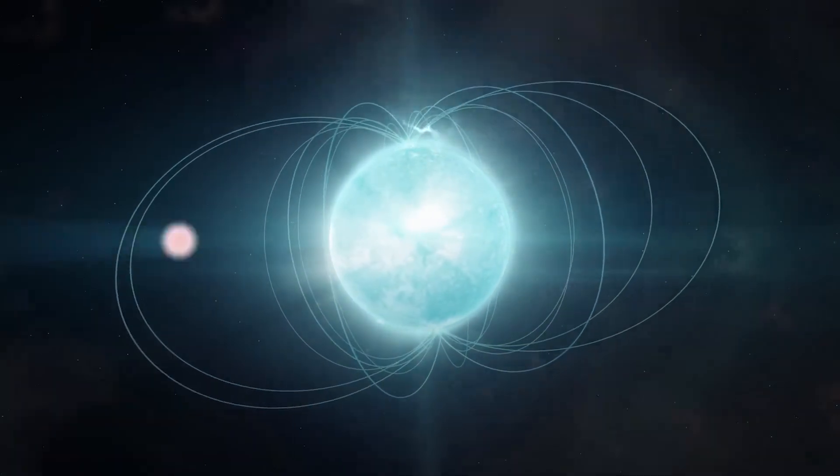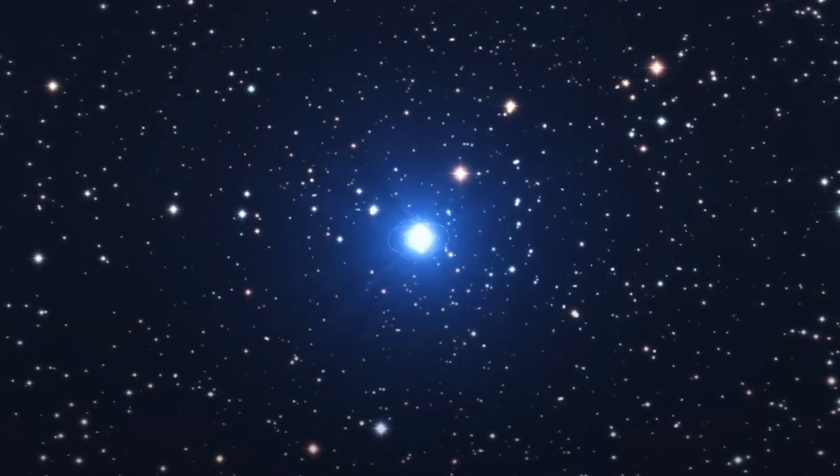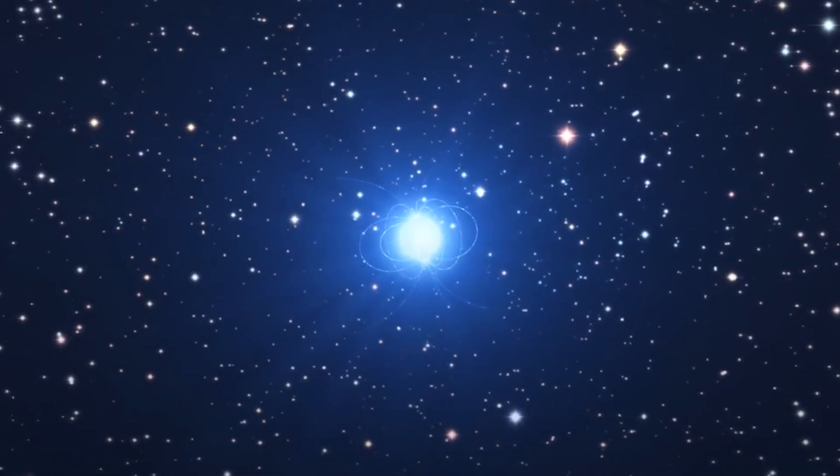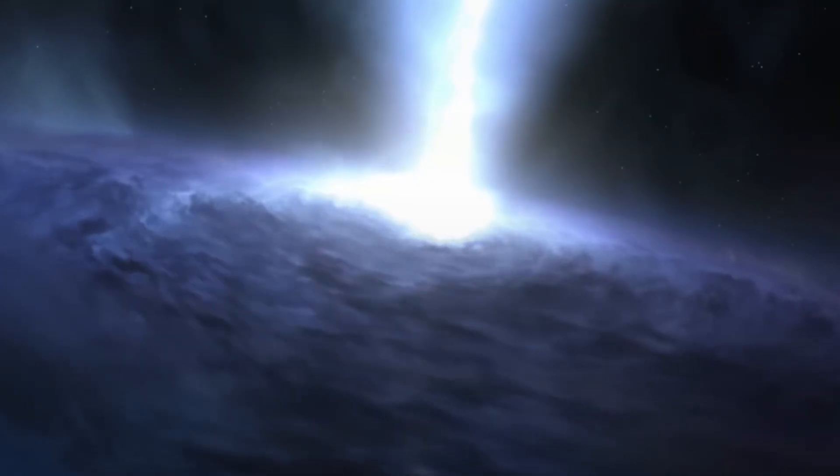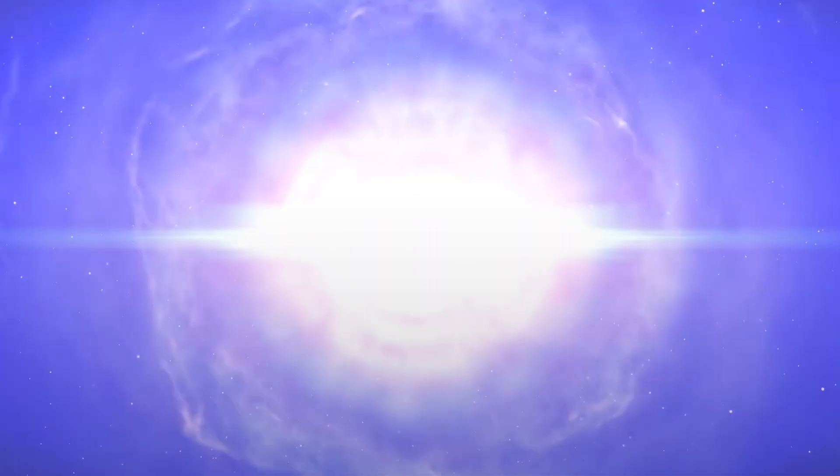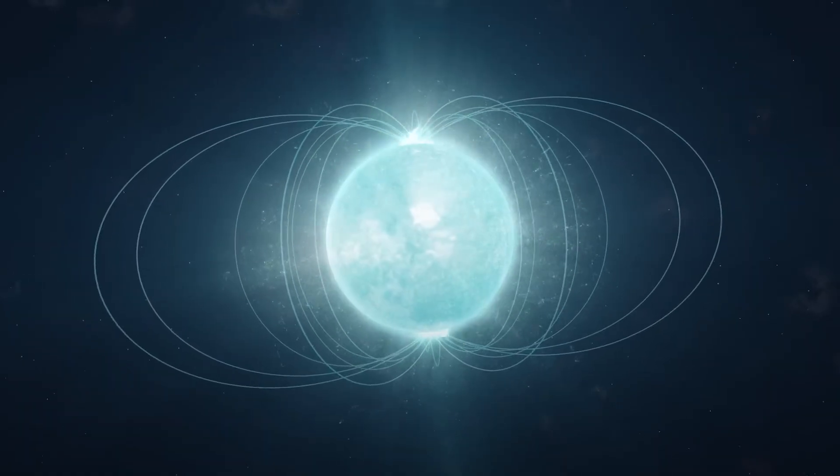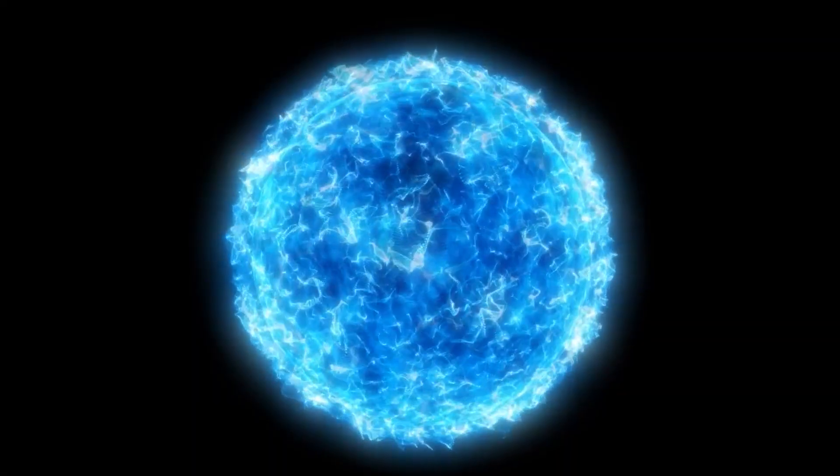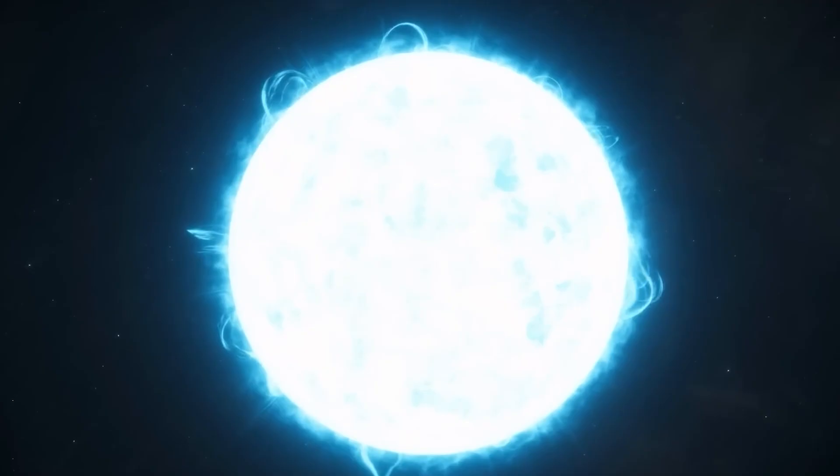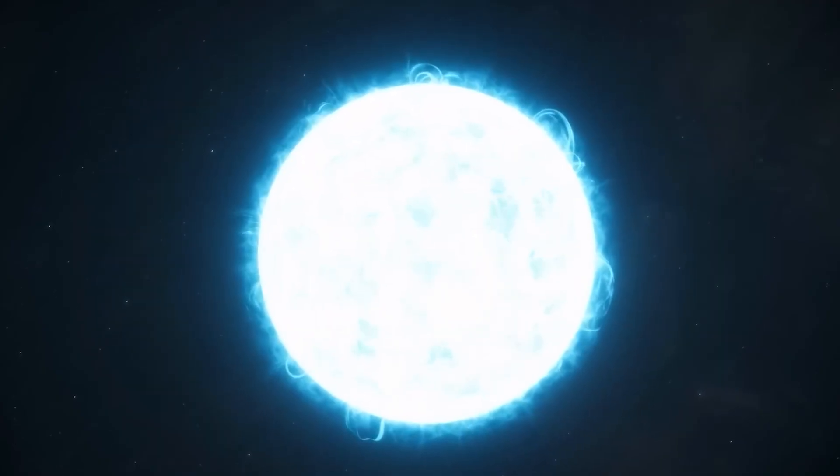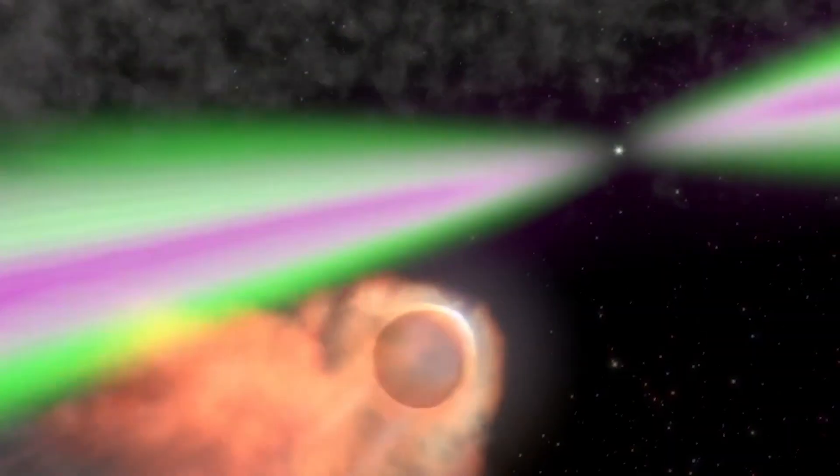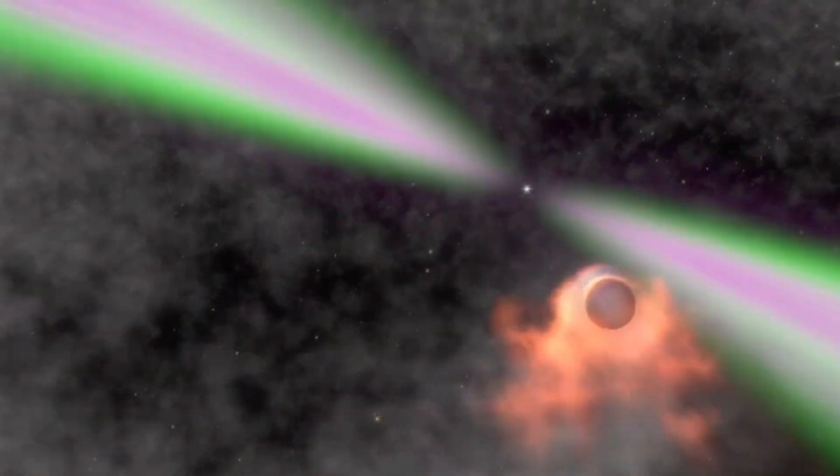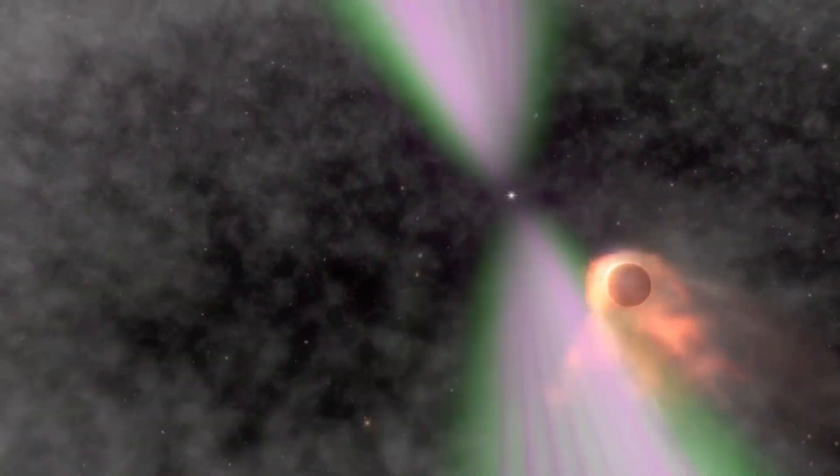Then there are the magnetars, the monsters of the neutron star family, with magnetic fields up to a thousand times stronger than typical neutron stars. They are ticking bombs of cosmic energy. When they unleash that energy, the outburst can release more power in a single second than our sun produces in a hundred thousand years. One magnetar eruption in 2004 was so strong that it briefly disrupted satellites and radio signals here on Earth from 50,000 light-years away.